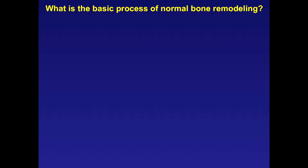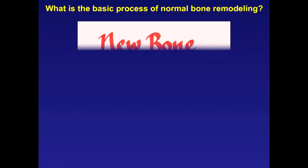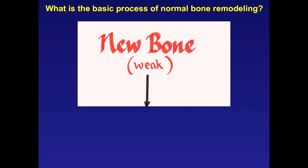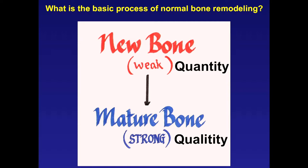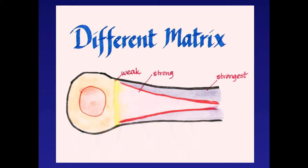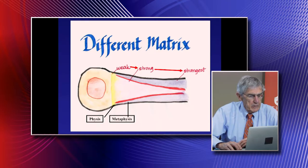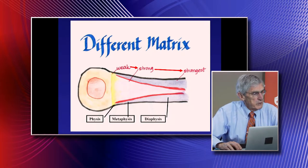Now let's look at the basic process of normal remodeling. This is the beauty of treating children because they have tremendous remodeling capacity. As a bone grows, it first produces new immature bone—quantity bone—which is weak and not laid down along lines of stress. With time, it gets remodeled into strong quality bone. Because of this, we have different matrices: the physis, metaphysis, and diaphysis. Meta means 'next to' and dia means 'in between.'